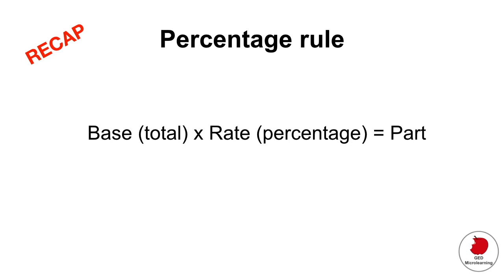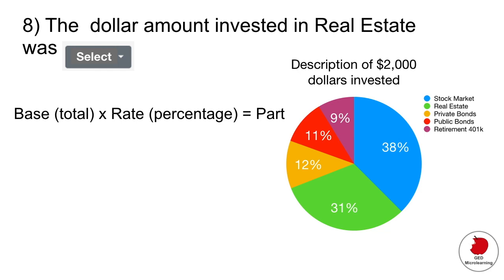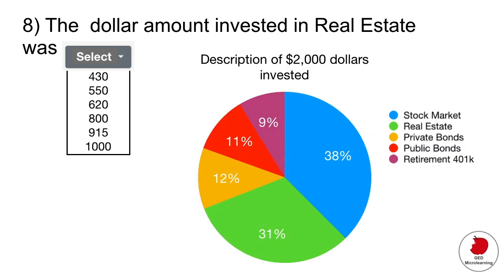In this question, they're telling you in the title that there is a $2,000 investment. That would be your base or your total. When you look at the percentage, they're asking you to look at the amount invested in real estate. If you look at the legend and you look at the green dot, that's for real estate. Real estate is 31% or 0.31, so you would multiply that by the amount invested, $2,000. That gives you $620 invested in real estate. Just drop your menu and then click on the correct answer.